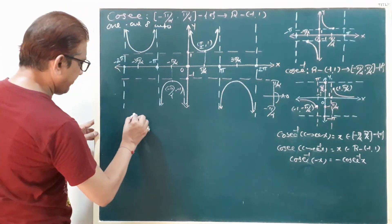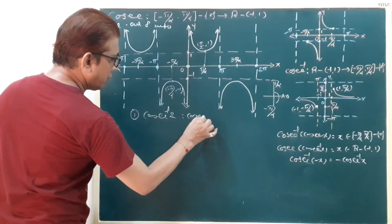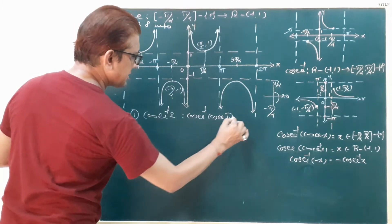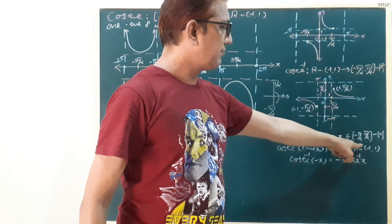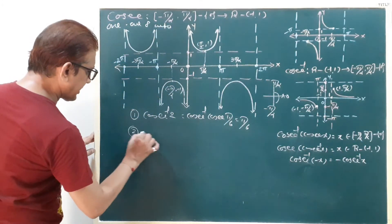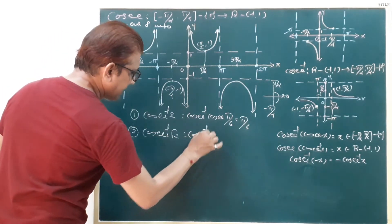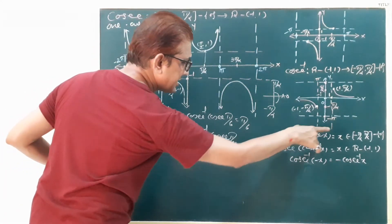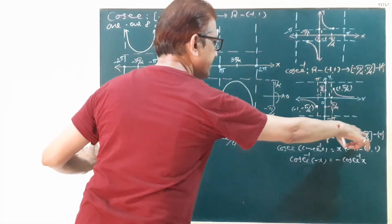Now we go to the examples. First: cosecant inverse of 2. We write cosecant inverse of cosecant pi by 6, so the answer is pi by 6, and pi by 6 belongs to the closed interval minus pi by 2 to pi by 2, minus {0}. Second: cosecant inverse of root 2. We write cosecant inverse of cosecant pi by 4; cosecant and inverse cancel, giving answer pi by 4. Pi by 4 belongs to this condition.